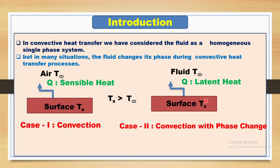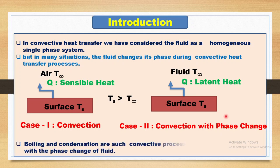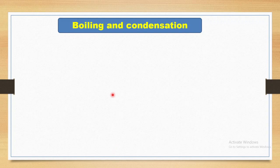Here I have considered Ts greater than T infinity. The reverse situation is also possible where T infinity is greater than Ts. So depending upon whether the surface or fluid temperature is greater, we can define convective heat transfer with phase change as either boiling or condensation. Boiling and condensation are two convective processes that are associated with the phase change of fluid.